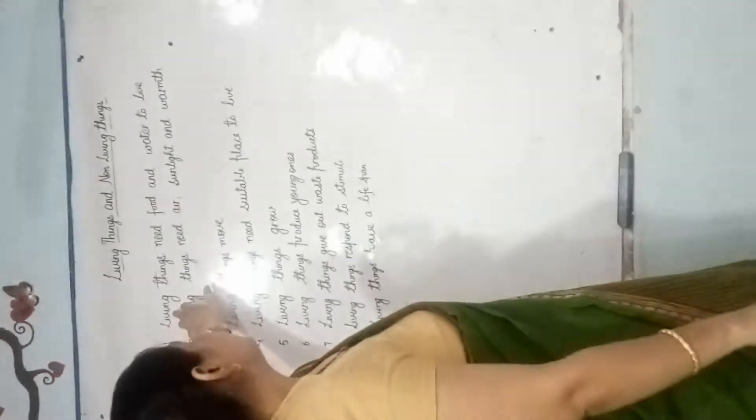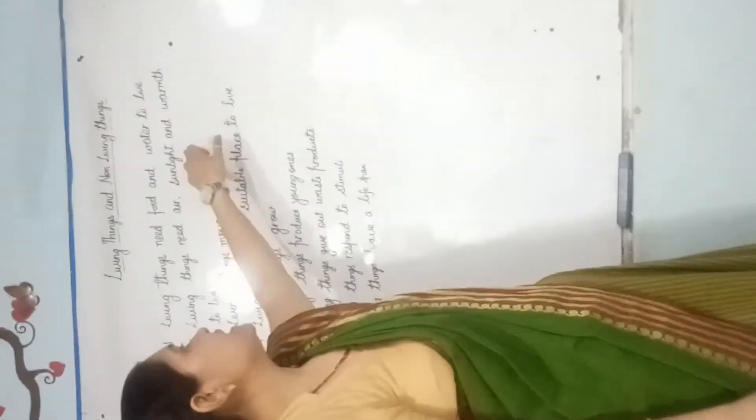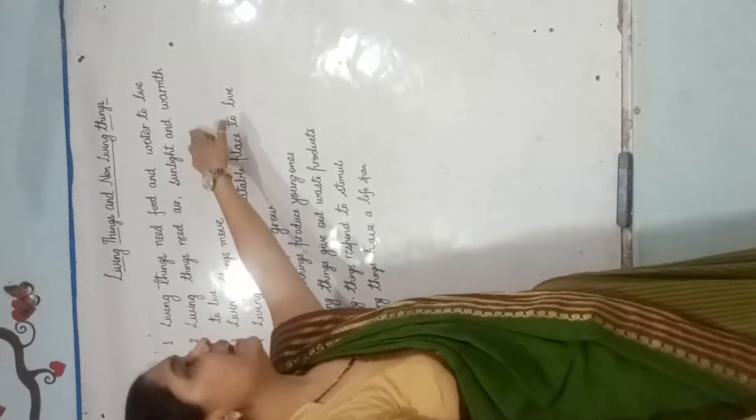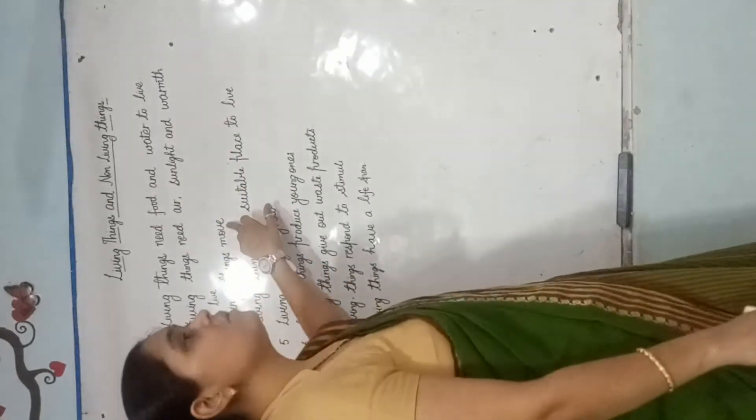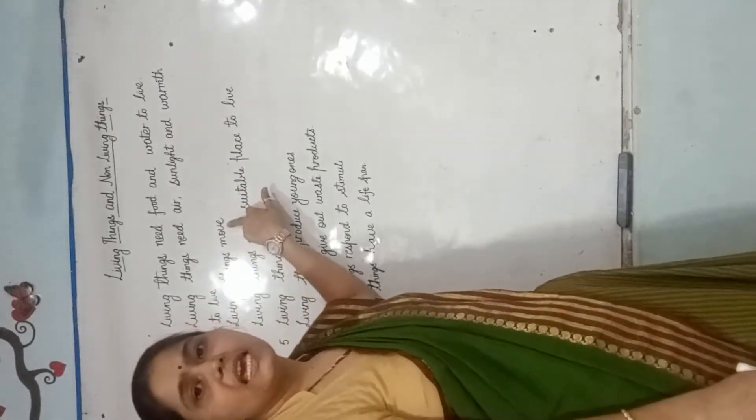In our previous class we discussed about living things needing food and water to live. Living things need air, sunlight and warmth to live. Living things move — एक जगह से दूसरी जगह. This we have discussed.